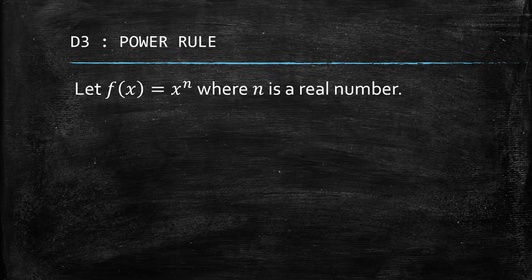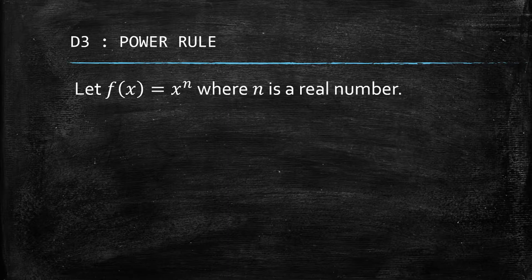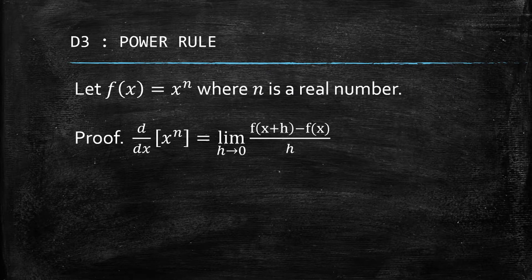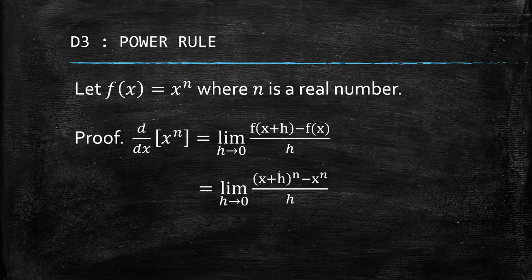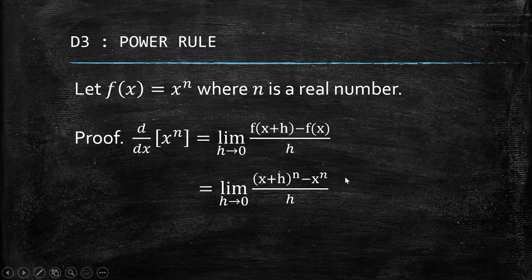Just a disclaimer: I'll be using a proof where the assumption is n being an integer. There is actually a proof for n being all real numbers, but in this course we don't have the proper tools to proceed with that proof. So right now I'll be proving it partially, just in the set of integers. We use the limit definition of the derivative and substitute x plus h into our function x to the power of n, giving us (x + h)^n minus x^n, all over h.